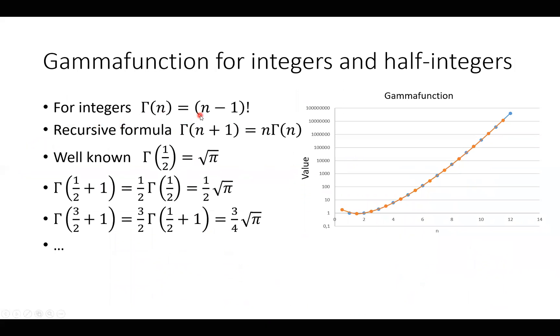It's recursive. So you can find gamma(n+1) as n multiplied by gamma(n). And it's a well known fact that gamma(1/2) is square root pi and then gamma(1/2 + 1) will be 1/2 square root pi using this recursive formula. So here we have drawn the values of the gamma function for integers and half integers. And you see the curve goes something like that.